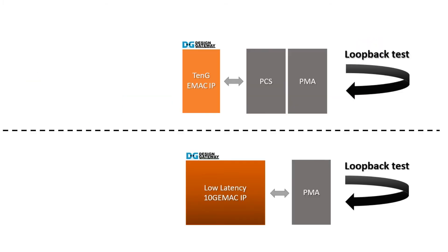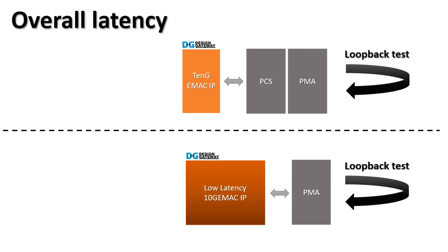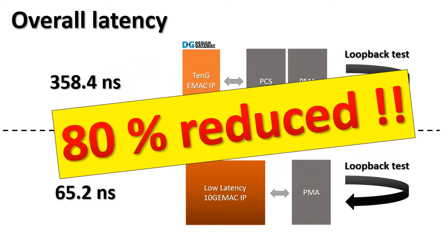For the latency of the 10G Ethernet MAC IP, we tested using a loopback test and measured the overall latency from the loopback system. Our standard 10G eMac with PCS and PMA connected achieved 358.4 nanosecond latency, while the low latency 10G eMac IP with built-in PCS connected to the PMA achieved 65.2 nanosecond latency — a reduction of more than 80%.